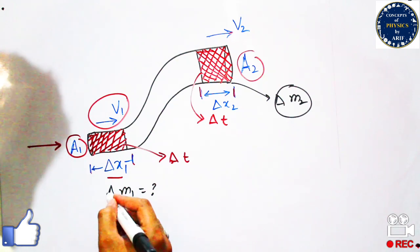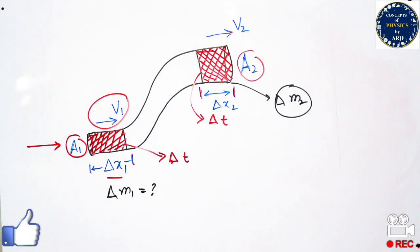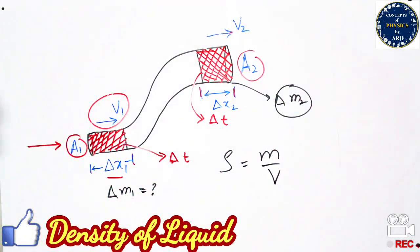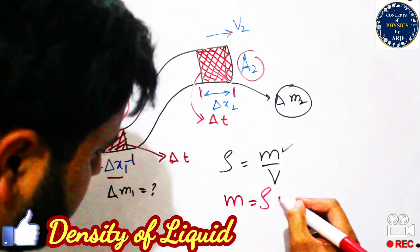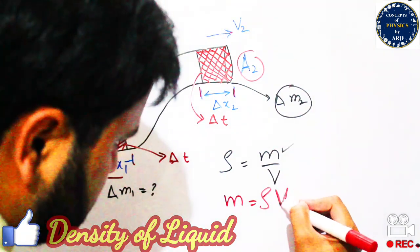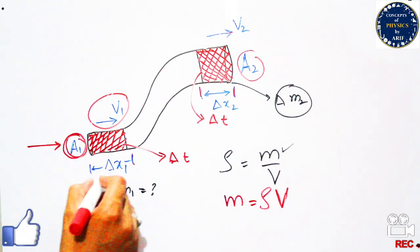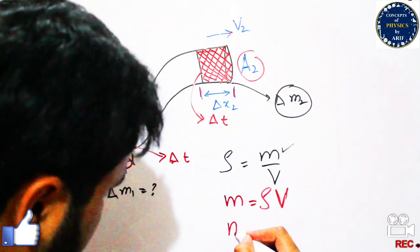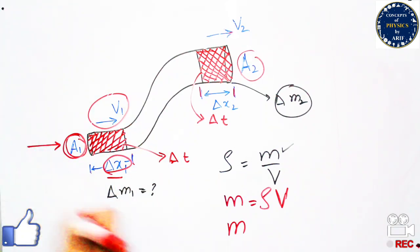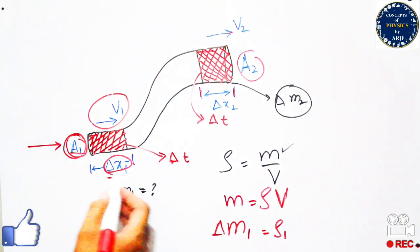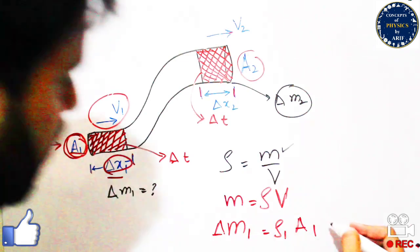We need to calculate these two masses and then find the relationship for the equation of continuity. We know the formula: density equals mass per unit volume. So mass equals density multiplied by volume. The volume comes from area multiplied by distance, so delta m1 equals rho1 multiplied by A1 multiplied by delta x1.